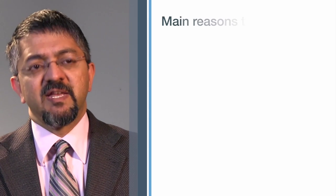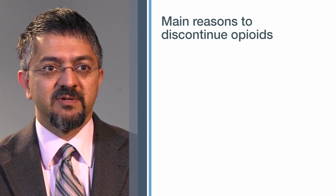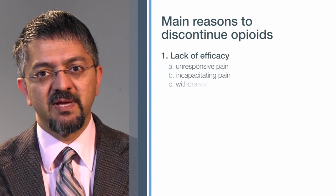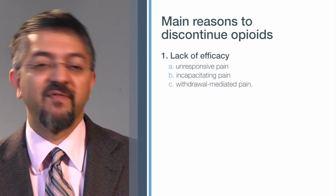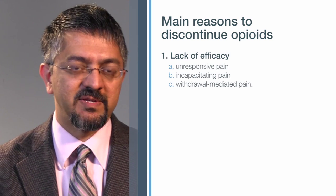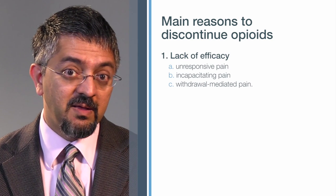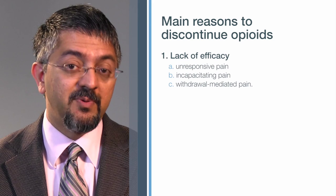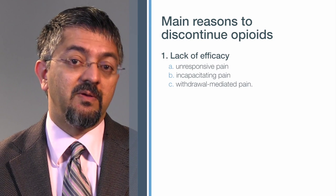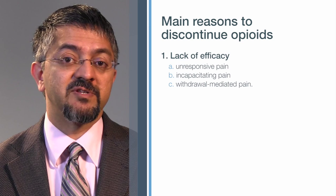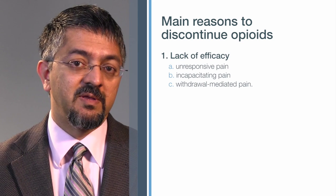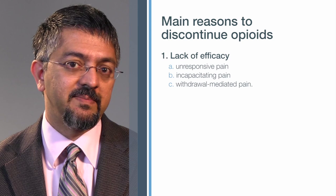So let's take a look at these main reasons to discontinue opioids. The first one is the lack of efficacy. How do you judge lack of efficacy? The person is in pain regardless of the various trials of different opioids. In other words, this is called unresponsive pain.